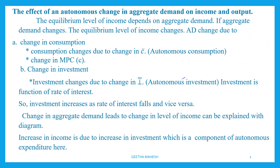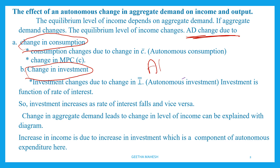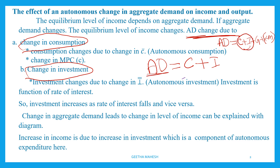Aggregate demand changes due to change in consumption and change in investment. We know the equation for aggregate demand: in a two-sector economy, aggregate demand equals consumption plus investment. In a four-sector economy, aggregate demand equals consumption plus investment plus government expenditure plus exports minus imports. Since we are taking only a two-sector economy, aggregate demand equals consumption plus investment.